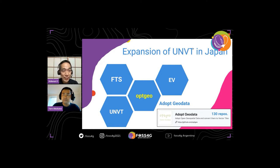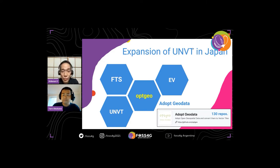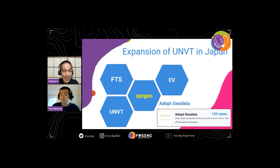We are working on several sub-projects based on the UN Vector Tile Toolkit. I would like to introduce three examples: Optgeo, EV, and FTS. First, I'd like to introduce the Optgeo project, or Adoptgeo data project. This project is to adopt existing open geospatial data and convert them into vector tiles, because there is a lot of very useful geospatial data but not yet on a vector platform. I actually have 130 repositories — most of them are really experimental, but I am converting a lot of open geospatial data into vector tiles.